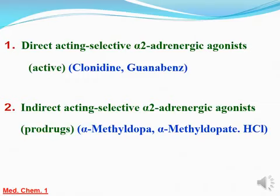بيتقسم لتو subclasses: الـ direct acting agonists زي الـ clonidine والـ guanabenz، والـ indirect acting selective alpha-2 adrenergic agonists ودول prodrugs منها الـ alpha-methyldopa والـ alpha-methyldopa HCl. يبقى الـ alpha-2 adrenergic agonists: إما direct acting زي الـ clonidine والـ guanabenz، وإما indirect acting selective alpha-2 adrenergic agonists دي بتكون prodrugs ومنها الـ alpha-methyldopa والـ alpha-methyldopa HCl.